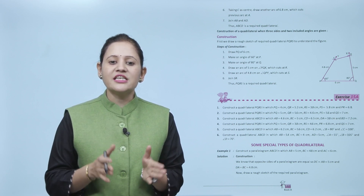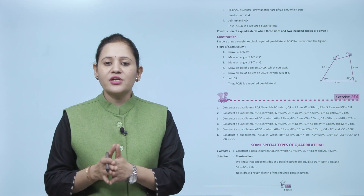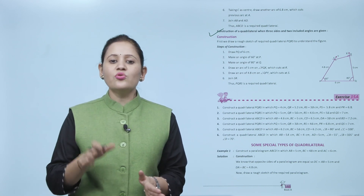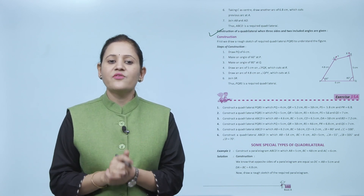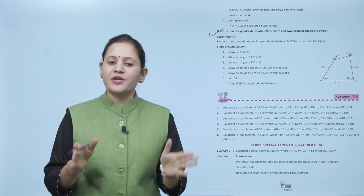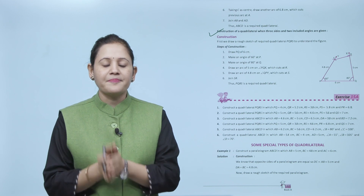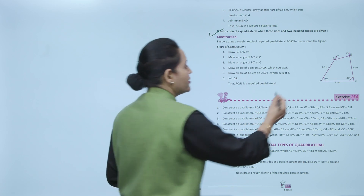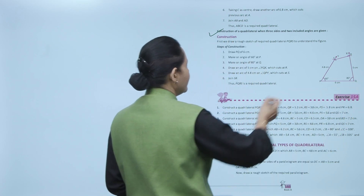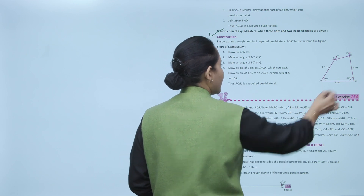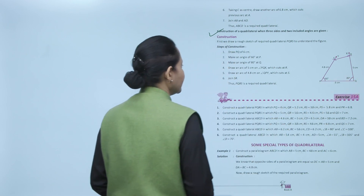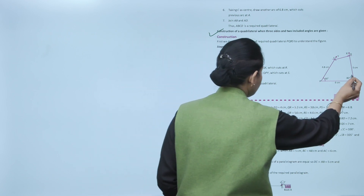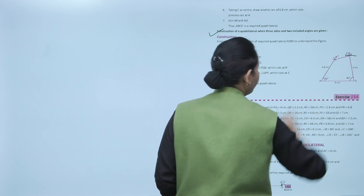Construction of a quadrilateral when three sides and two included angles are given. First, we draw the rough sketch of required quadrilateral PQRS to understand the figure. Steps of construction: draw PQ = 6 cm. At P, make an angle of 60 degrees, and at Q, make an angle of 80 degrees. Then, we will draw an arc of 5 cm along one ray and an arc of 4.8 cm along the other.